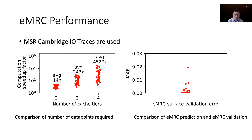Let's look at the performance. For evaluation, we used the well-known MSR IO trace from SNEA. The left figure shows the speedup factor in terms of number of data points required using our EMRC approach versus generating the whole original MRC. For two-tier caching, the average speedup factor is 14 times. And for four-tier caching, the average speedup factor is over 4,000 times. The right figure shows the mean absolute error between EMRC prediction and the EMRC validation. We simulated thousands of cache configurations using EMRC parameters for each trace and compared the miss ratio results with the predicted value. We were able to achieve less than 2% MAE for all the traces we used, meaning the EMRC partitioned caches act as predicted in removing those performance cliffs.